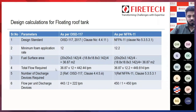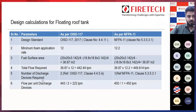Total flow required is calculated by multiplying fuel surface area by application rate: 442.44 lpm as per OSD 117 and 449.814 lpm as per NFPA 11. For number of discharge devices, per OSD 117 clause 4.4.53 it is 2, and per NFPA 11 clause 5.3.5.3.1 it is 1. Flow per unit discharge device: for OSD 117 it is 222 lpm (442/2), and for NFPA it is 450 lpm (450/1). The type of discharge devices used for a floating roof tank is foam maker with pourer, for both OSD and NFPA.